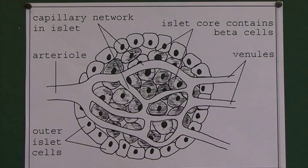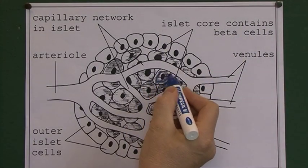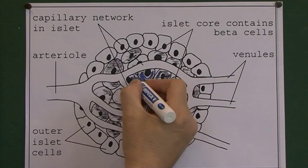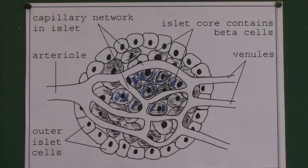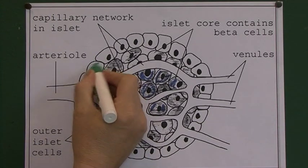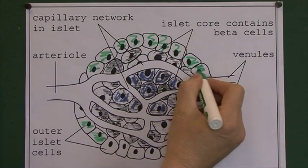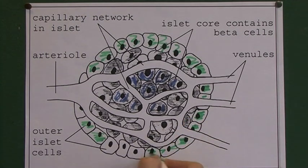This diagram is showing a single pancreatic islet. We can see that there's the islet core containing beta cells. When the level of blood sugar rises, these beta cells will detect that and produce insulin. Round about here we can see the outer islet cells — the alpha cells. When the blood sugar level is low, it will be detected by these alpha cells and they will respond by producing glucagon.